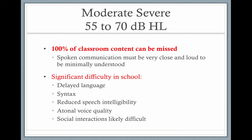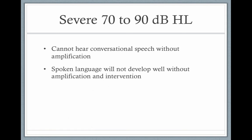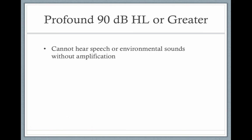With a moderate to severe hearing loss from 55 to 70 dB HL, 100% of classroom content can be missed, and spoken communication must be very close and loud to be minimally understood. There is significant difficulty in schools, with delayed language, syntax issues, reduced speech intelligibility, atonal voice quality, and difficult social interactions. As we enter severe hearing loss, spoken language will not develop well without amplification or intervention. A profound hearing loss — 90 dB HL or greater — means the child cannot hear speech or even environmental sounds without amplification.